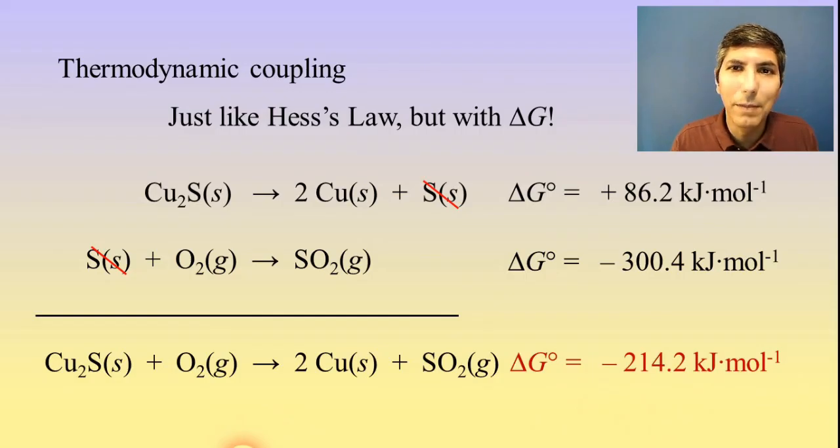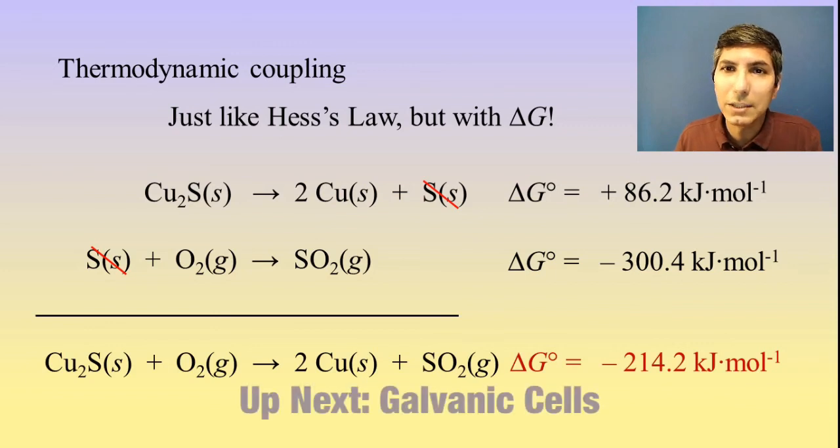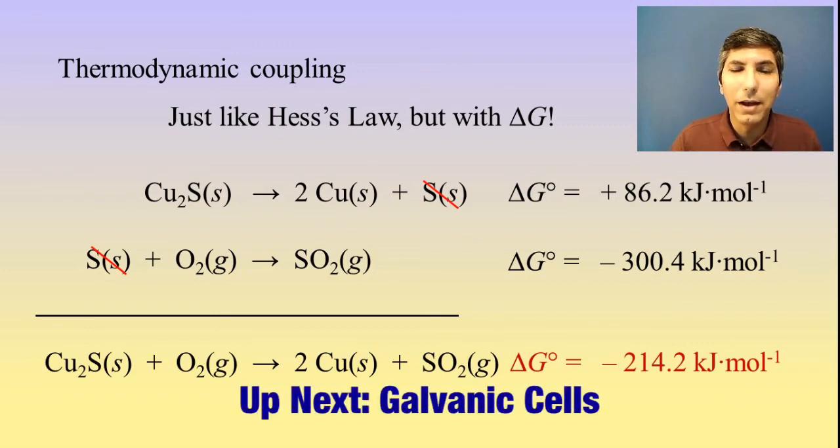So if you remember doing Hess's law back in unit six, this is the same thing. All you have to do is add the reactions and add those delta G values together. If you learned something from this video, please slam that like button. And I hope to see you in the next video where we're going to move on to the next part of unit nine, which is all about electrochemistry. Hope to see you then.